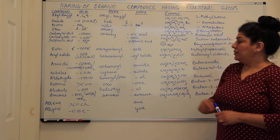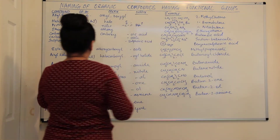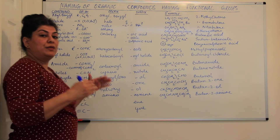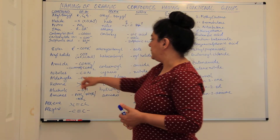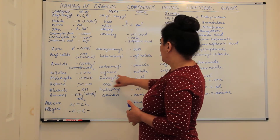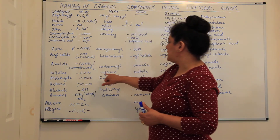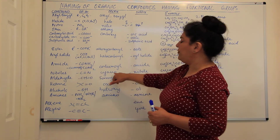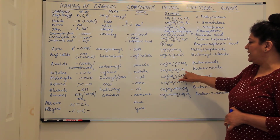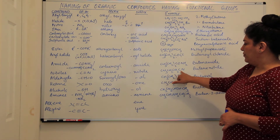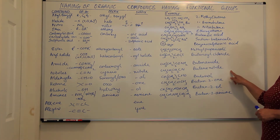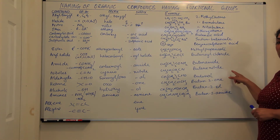Nitriles are written as 'cyano' groups if they are prefixes, and 'nitrile' if a suffix. For example, with CN — which is also a terminal group — counting: first carbon, second, third, fourth — this would be butanenitrile. These were earlier called cyanides.